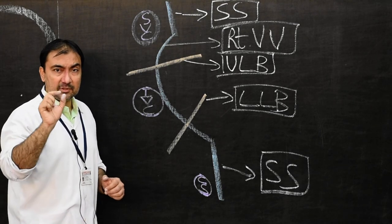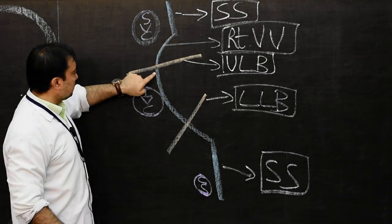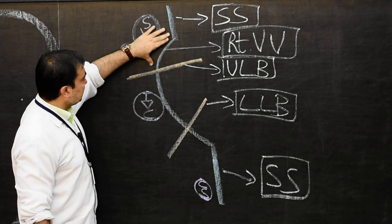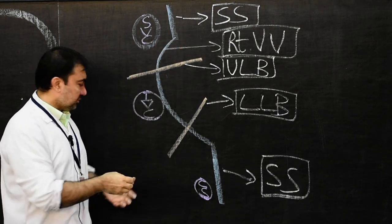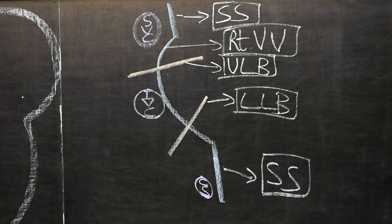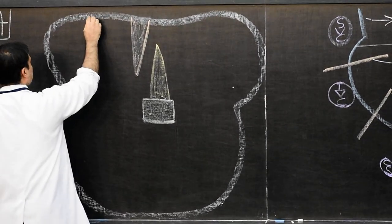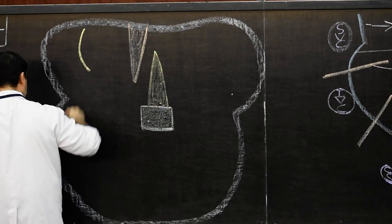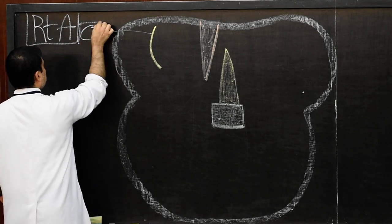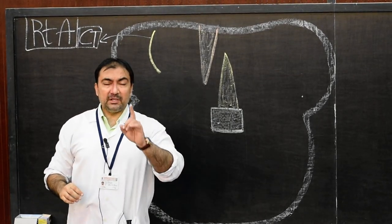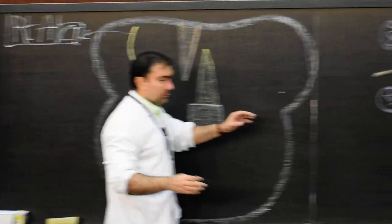Now the entire right atrium develops from all these sources. The upper part of the right venous valve — above the superior limbic band — plus septum spurium will develop into the crista terminalis. I will draw the crista terminalis at this point and label it accordingly.